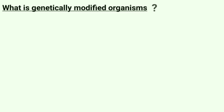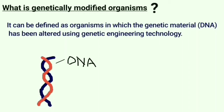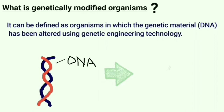What are genetically modified organisms? They can be defined as organisms — like plants, animals, and microorganisms — in which the genetic material has been altered in a way that does not occur naturally by mating. They are obtained using genetic engineering techniques. GMO means DNA from two different species are combined to create a new species.